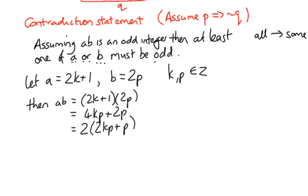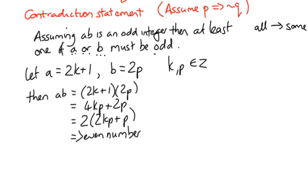Now the implication of this statement here, because it's a multiple of 2, is that it's an even number. In other words, if A or B is odd, then AB is even.